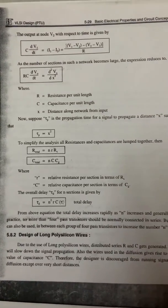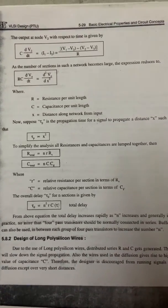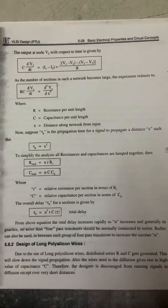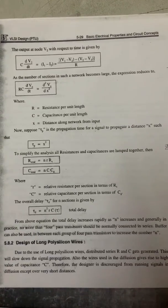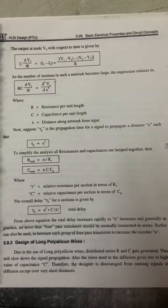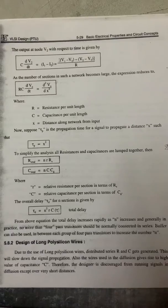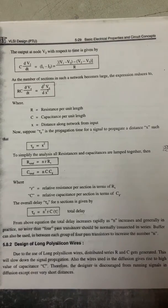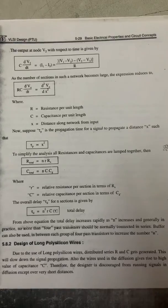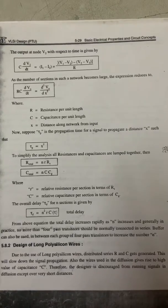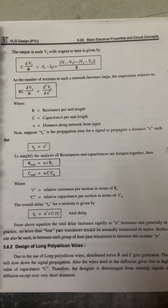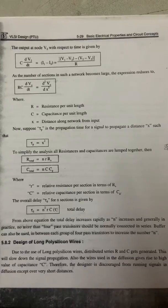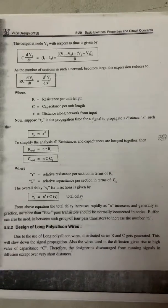From this equation, the total delay increases rapidly as n increases. In practice, no more than four pass transistors should normally be connected in series. A buffer can also be used between each group of four pass transistors to increase the number n. This concludes the first type: cascaded pass transistors.